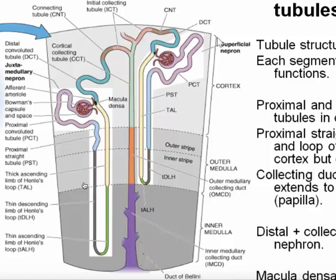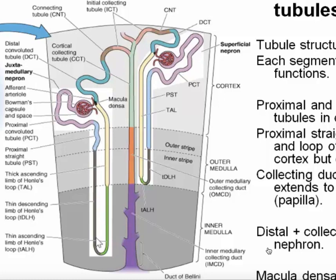We've talked about the cortical glomeruli — that's 90% of the glomerular population — and the tubules that they supply. Let's now look briefly at the juxtamedullary glomeruli. These are deep glomeruli. The basic structure of the tubule is similar: proximal convoluted tubule, proximal straight tubule, which turns into a loop of Henle. These juxtamedullary glomeruli give rise to very long loops of Henle.